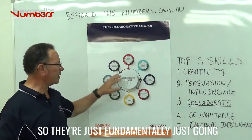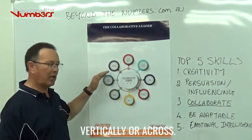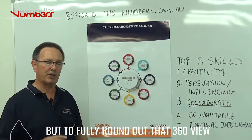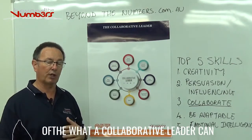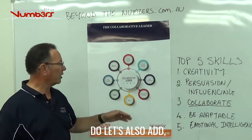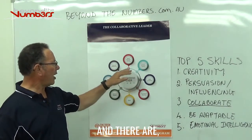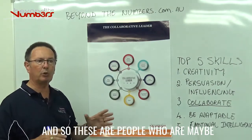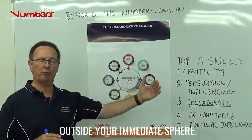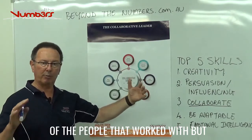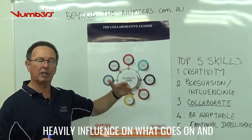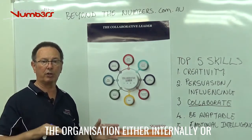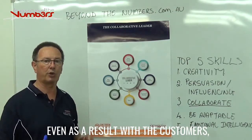Those are just fundamentally vertical or across, but to fully round out that 360 view of what a collaborative leader can do, let's also add in external influences. These are people who are maybe outside your immediate sphere of the people you work with, but who heavily influence what goes on in the organisation — either internally or as a result with customers.